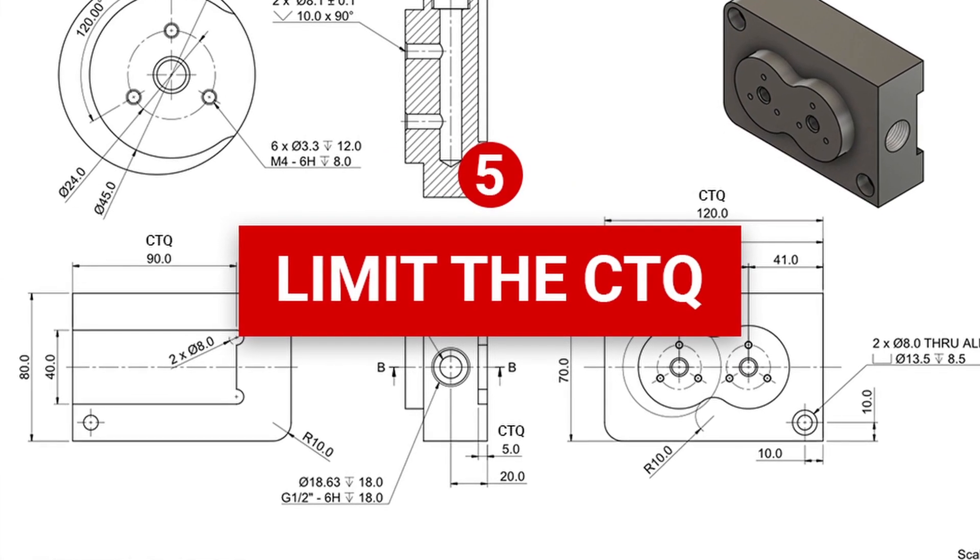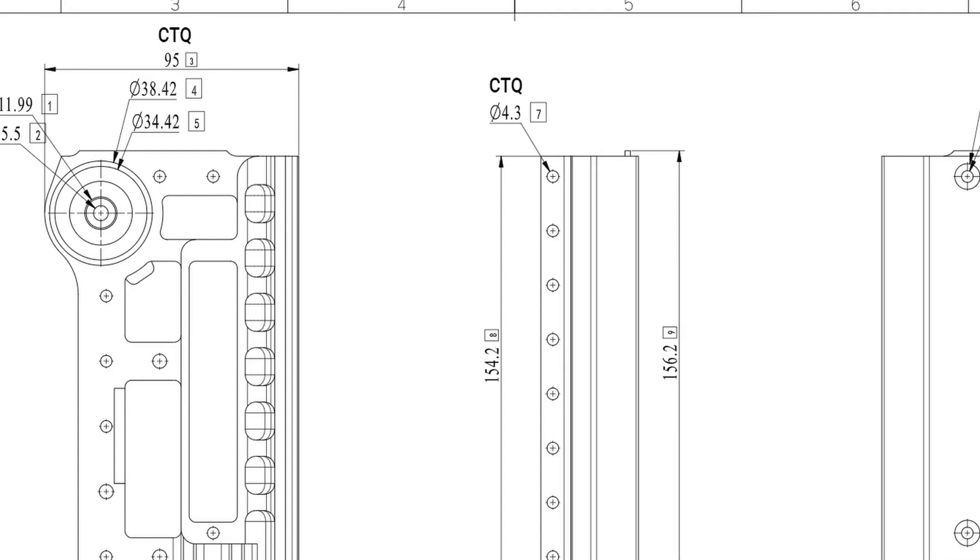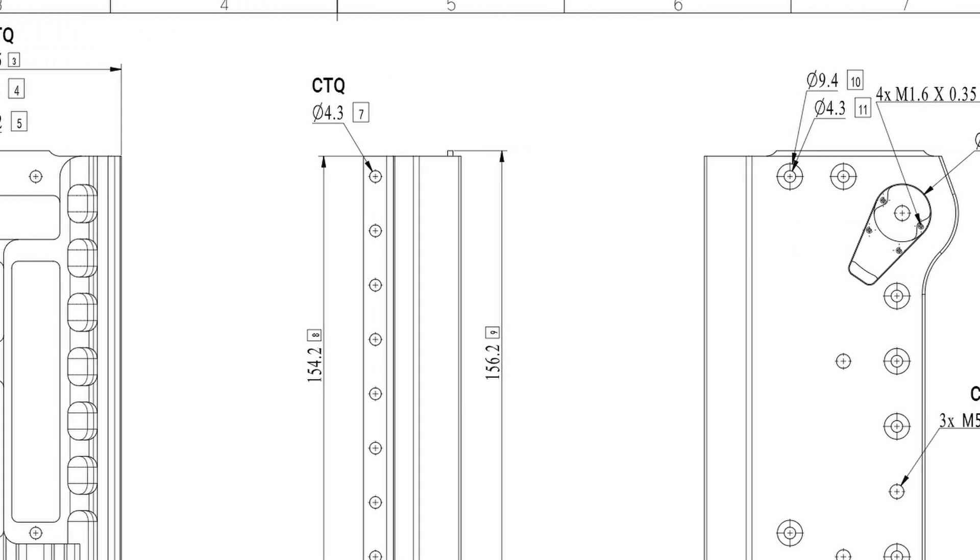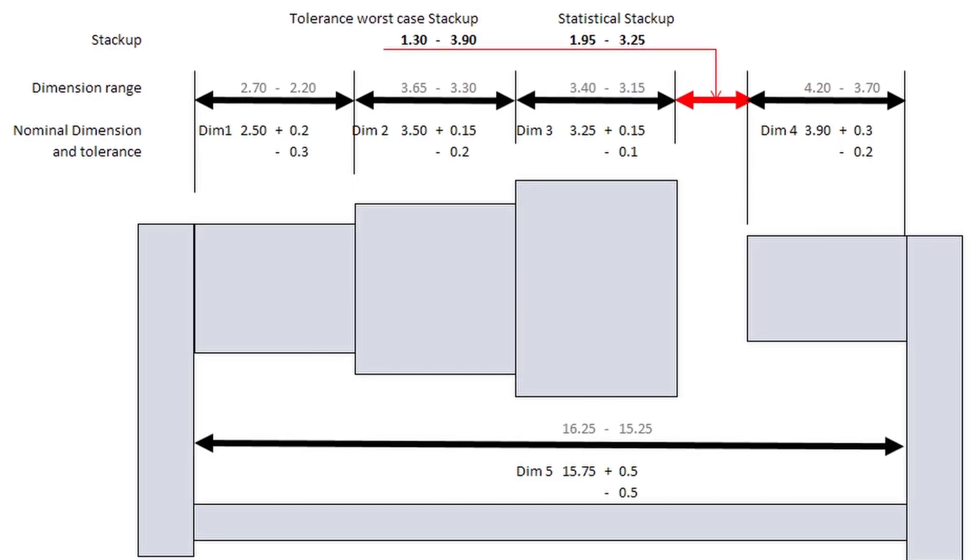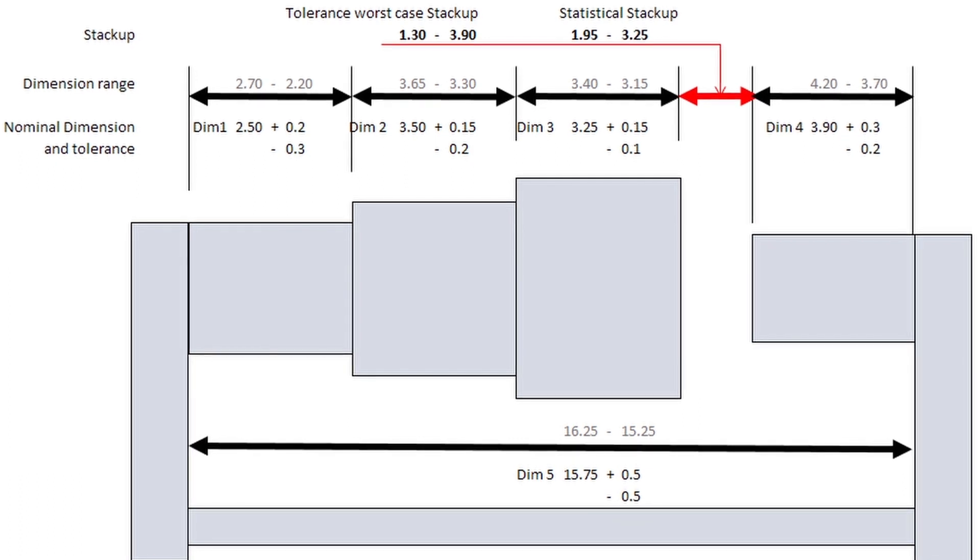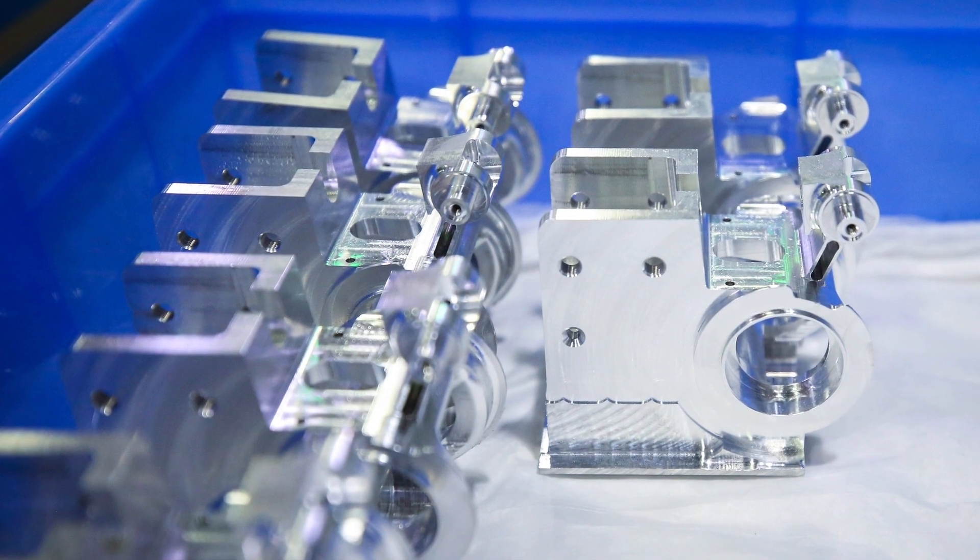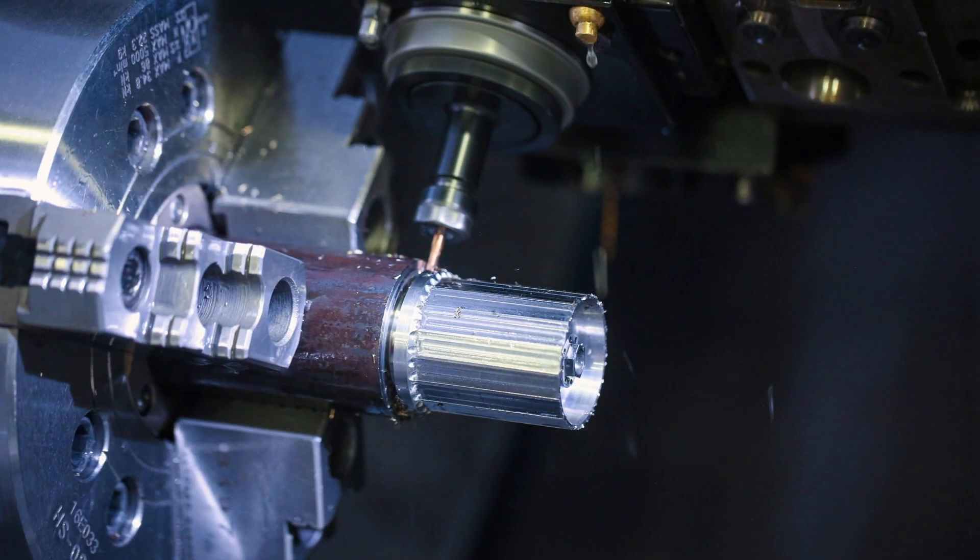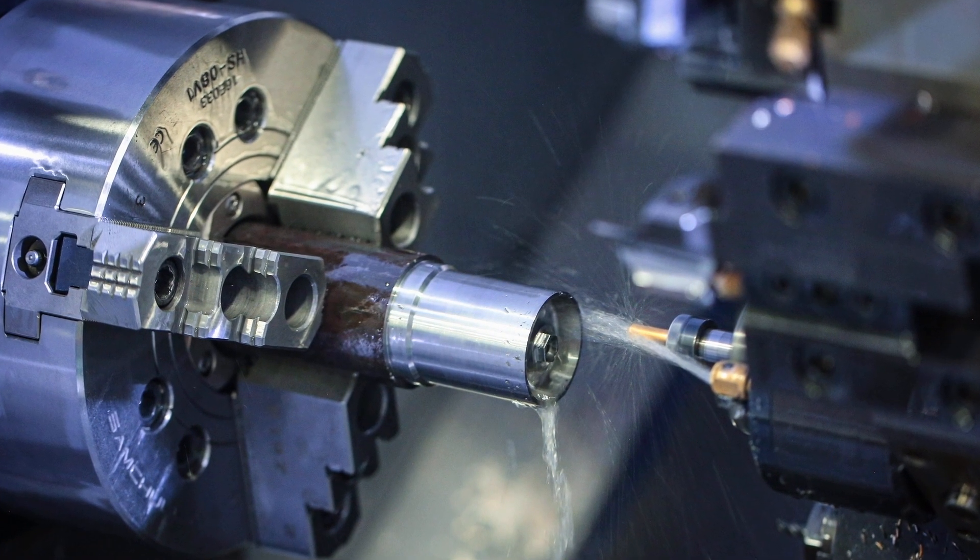Step number five. Limit the CTQ or critical to quality dimensions. In our experience, 10 is more than enough for even the most complicated part. This is because too many tight tolerances adversely affect what's called tolerance stack-up or layering of risk. For a manufacturer, in practice, a single tightly toleranced critical dimension guarantees that a certain percentage of parts will be scrapped trying to achieve this tolerance. Each additional critical dimension then increases this scrap rate exponentially.